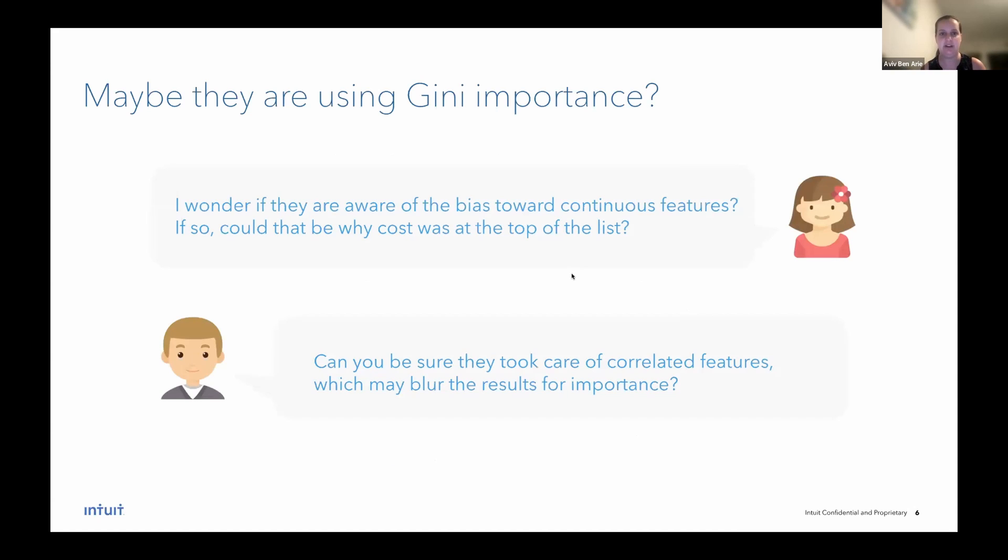I talked about this method and my concerns with my colleague Yair. I collaborate with him in the university collaboration program. And I was actually worried that because the data scientists on the team are not aware of the high bias towards continuous features, if this is the case, this can be the reason why cost, which is very continuous, was at the top of the feature list. My colleague was worried that they may have not taken care of correlated features within the model. And this also can blur results for Gini importance.